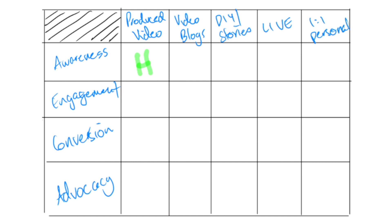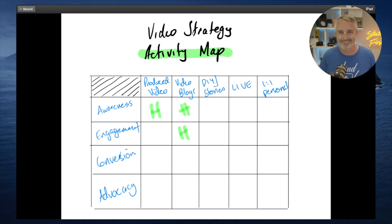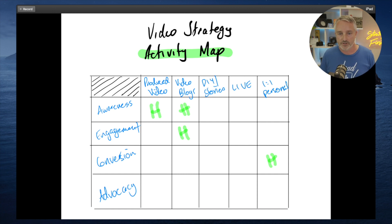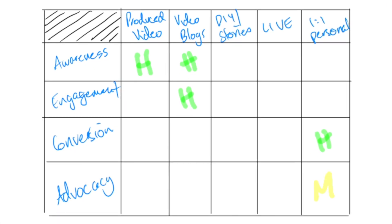We're also going to be creating some video blogs designed to build engagement and awareness, so I'm going to mark those as high priority in both spaces. We're also going to create some personalized video used in the sales process, encouraging our sales teams to do more personalized one-to-one sales videos in their sales funnel — also a high priority. We also recognize there are some untapped additional sales from advocates or people who have bought from us before, so we'll use one-to-one personalized video to re-engage past customers, but we're calling that a medium priority — marking an M there.